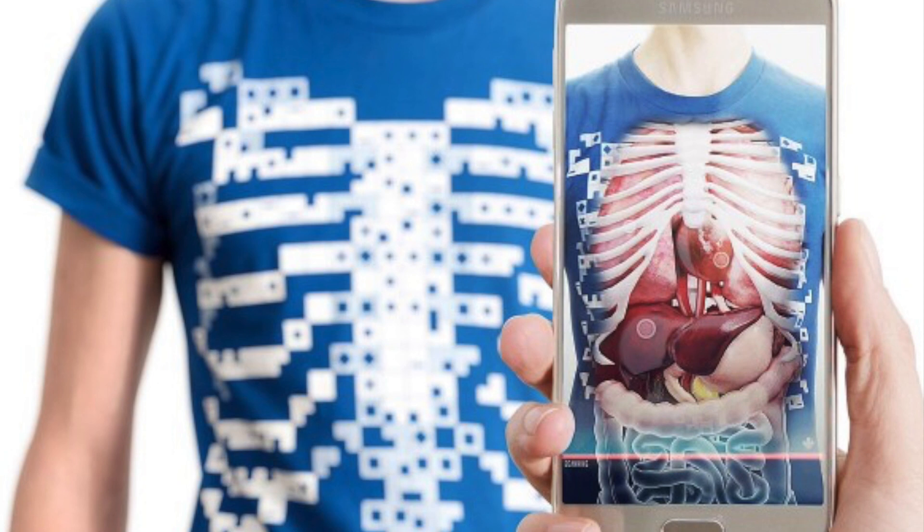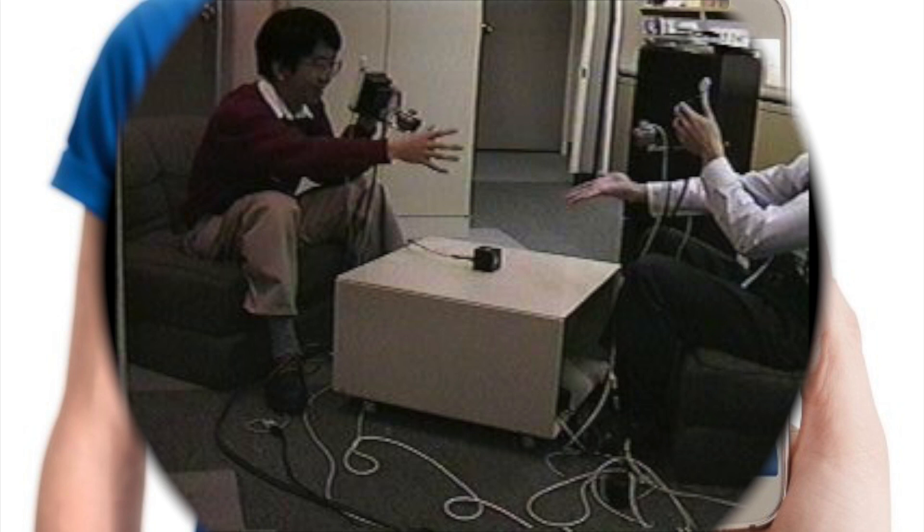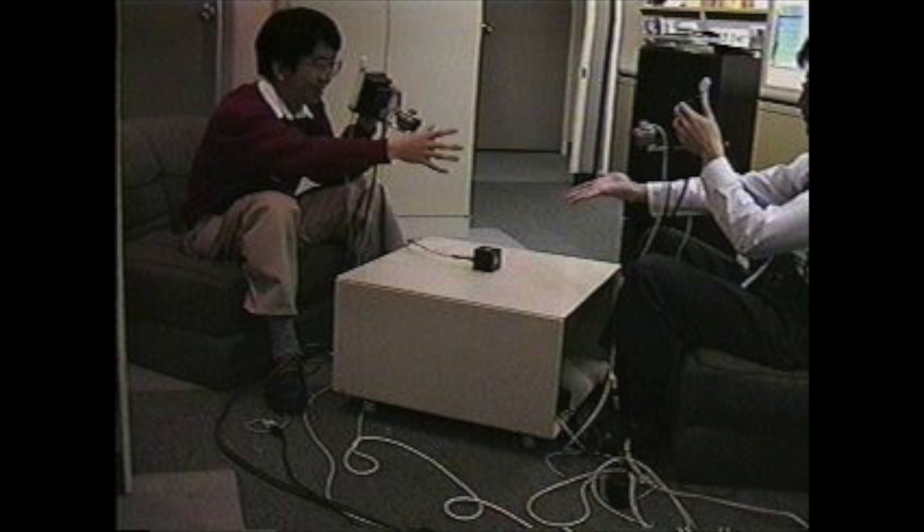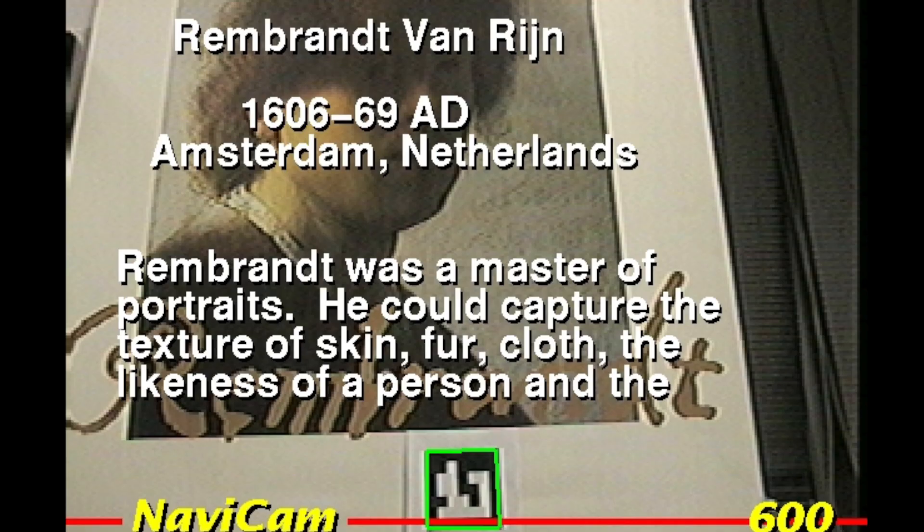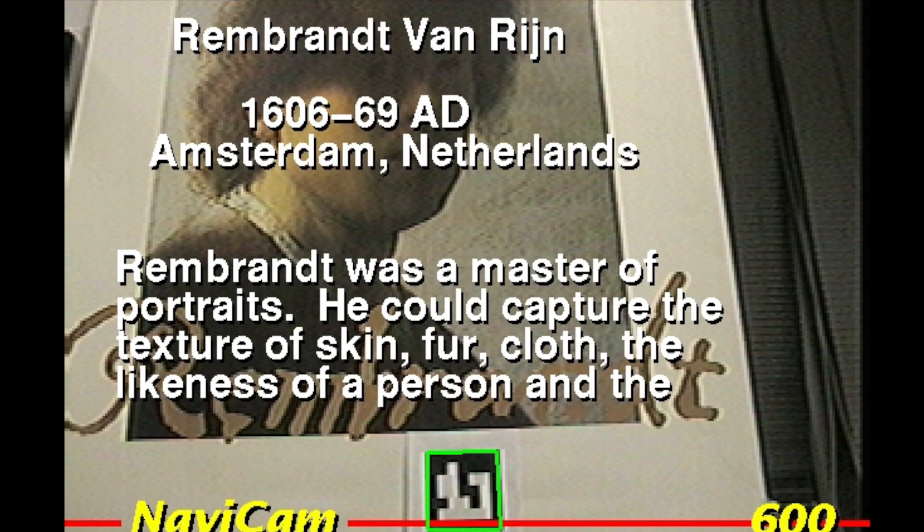In 1995, Rekimoto and Nagao created the first true, albeit tethered, handheld augmented reality display. Their NaviCam was connected to a workstation but was outfitted with a forward-facing camera. From the video feed, it could detect color-coded markers in the camera image and display information on a video see-through view.